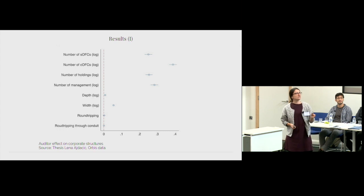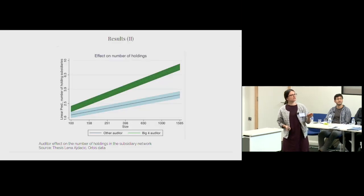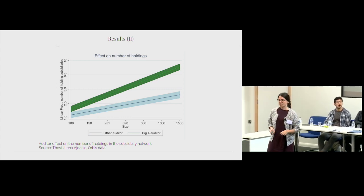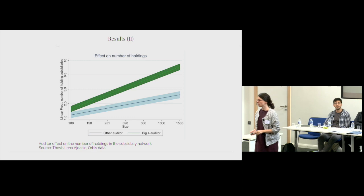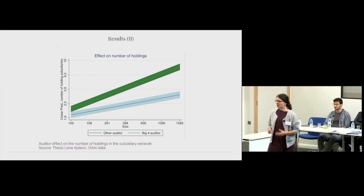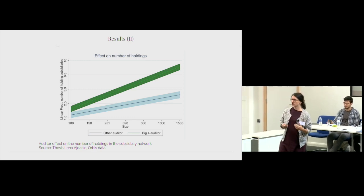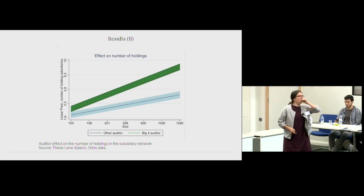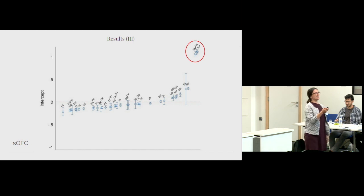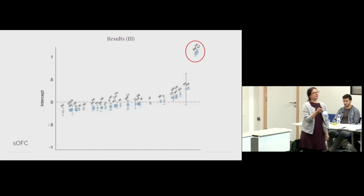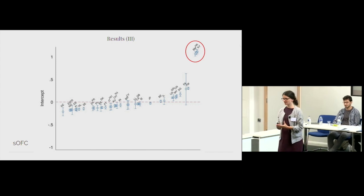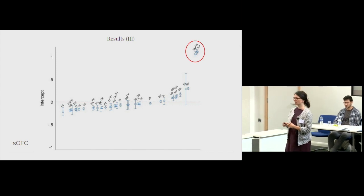Besides these results, we found some side things which are also of interest, but not at the core of the paper. We see that the auditor effect increases with the size of the companies. So bigger companies are more strongly influenced by the auditor. And we found something else which is interesting, namely that companies which have their parent company in a sink jurisdiction, they make a higher use of other sink jurisdictions, not of their own one, but of others.